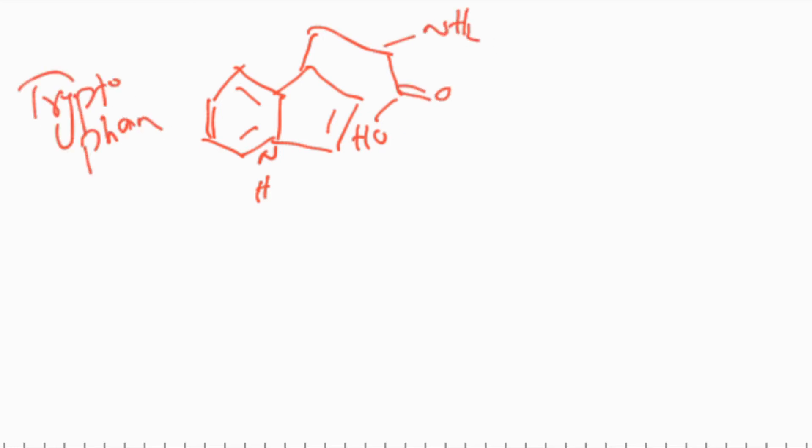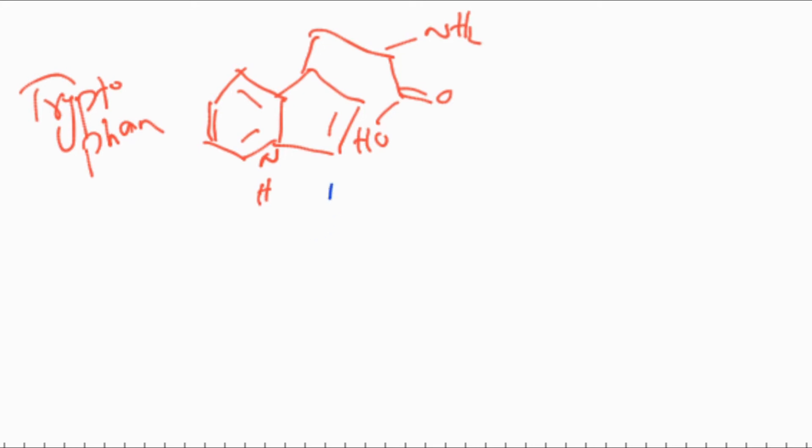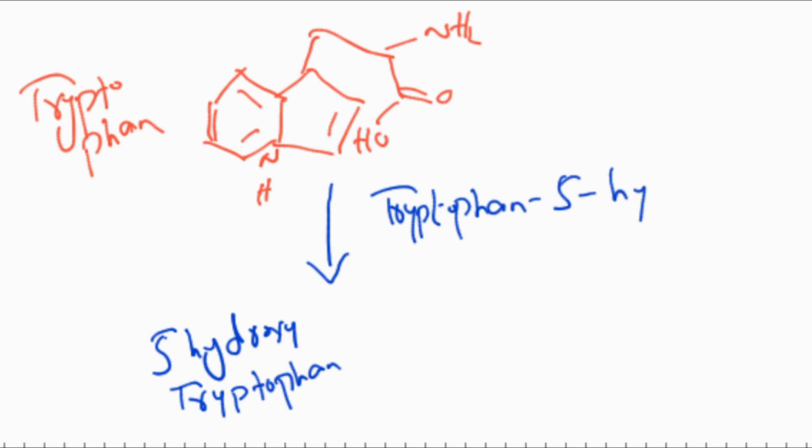The first step in the biosynthesis of melatonin is the conversion of tryptophan into 5-hydroxy tryptophan. This conversion is carried out by the enzyme tryptophan 5-hydroxylase.